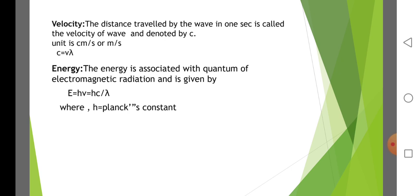Velocity. The distance traveled by a wave in one second is called the velocity of the wave, denoted by c. The unit is centimeter per second or meter per second. The formula is c equals nu times lambda. Energy. The energy associated with a quantum of electromagnetic radiation is given by E = hν = hc/λ, where h is Planck's constant.